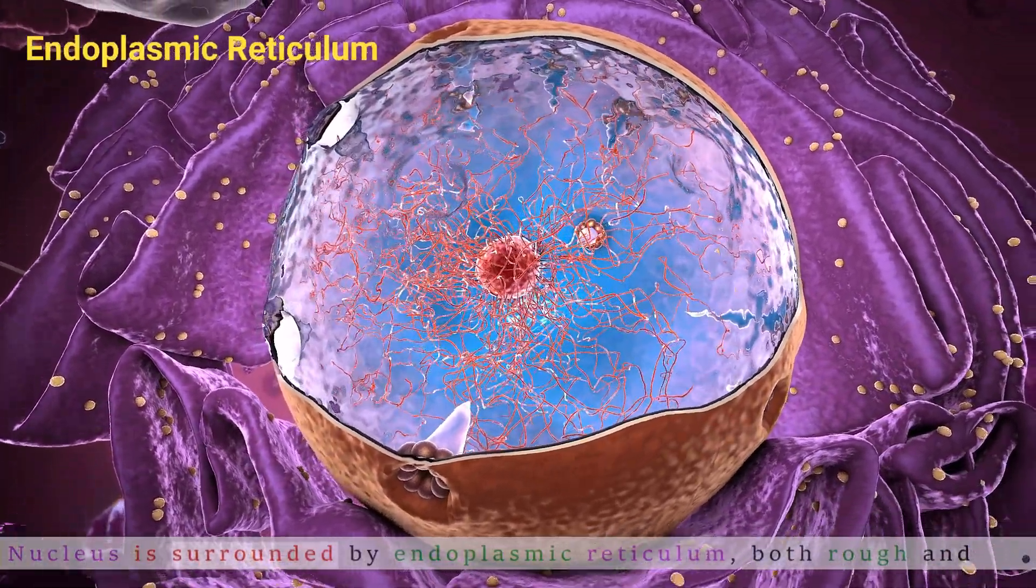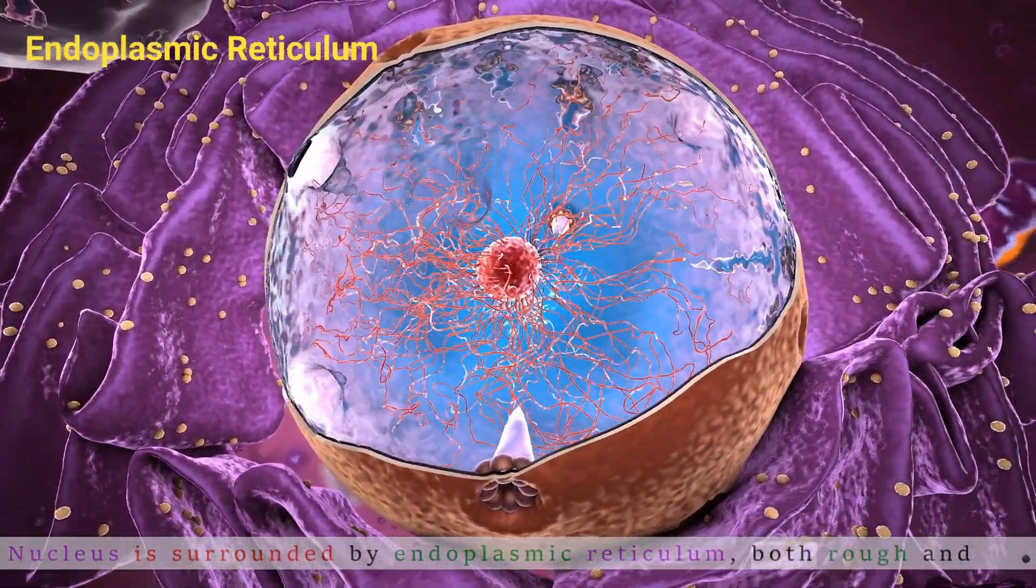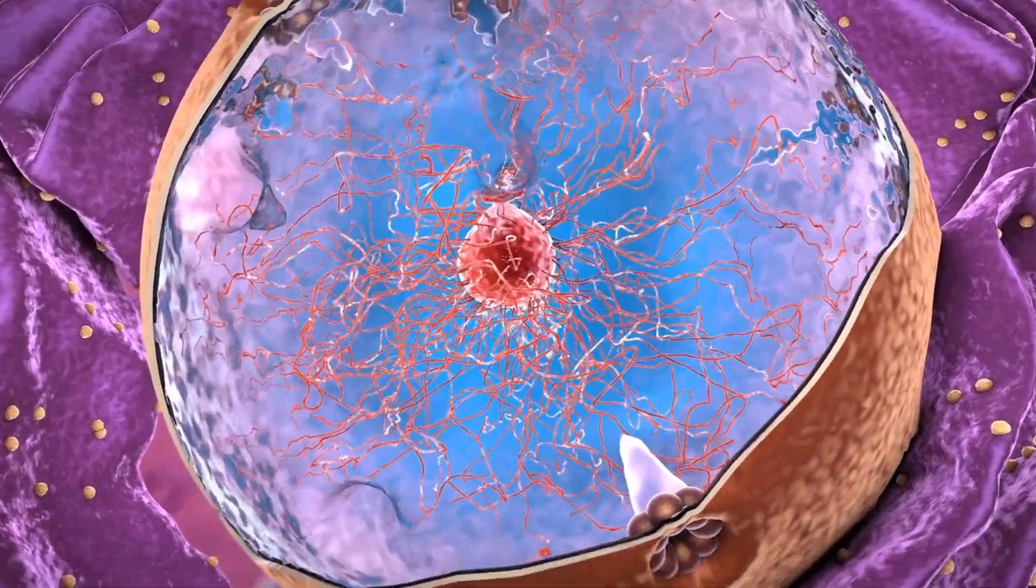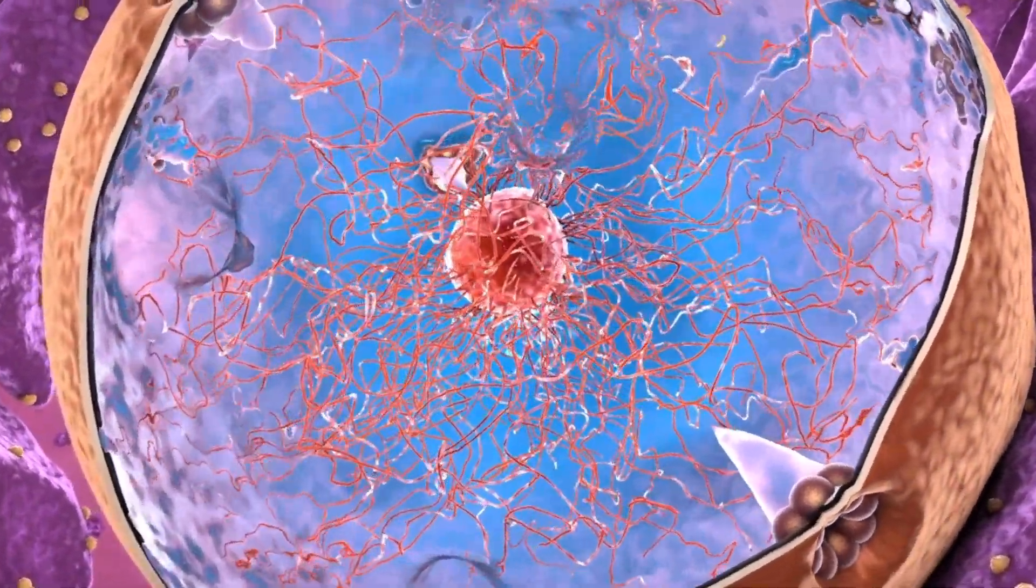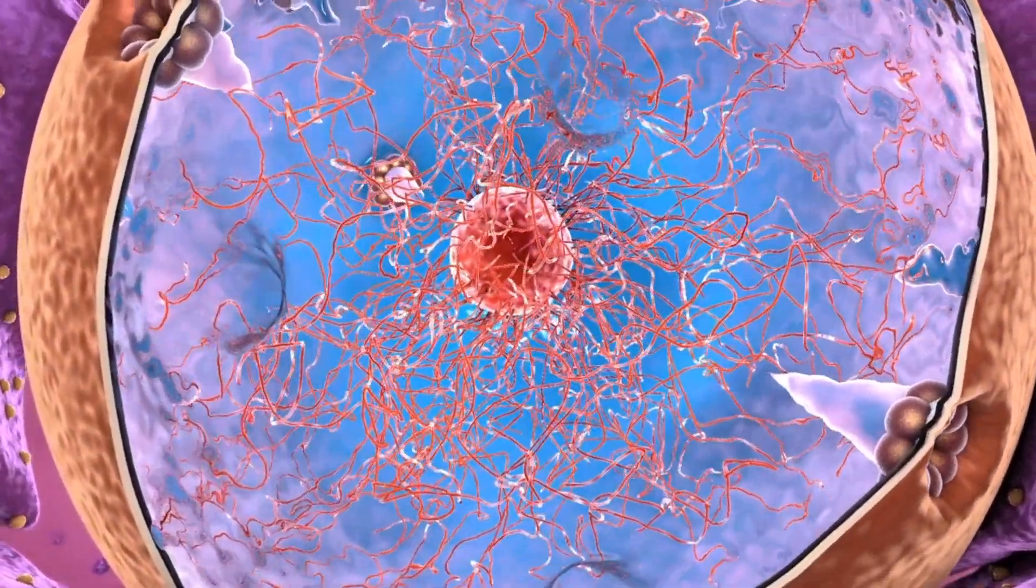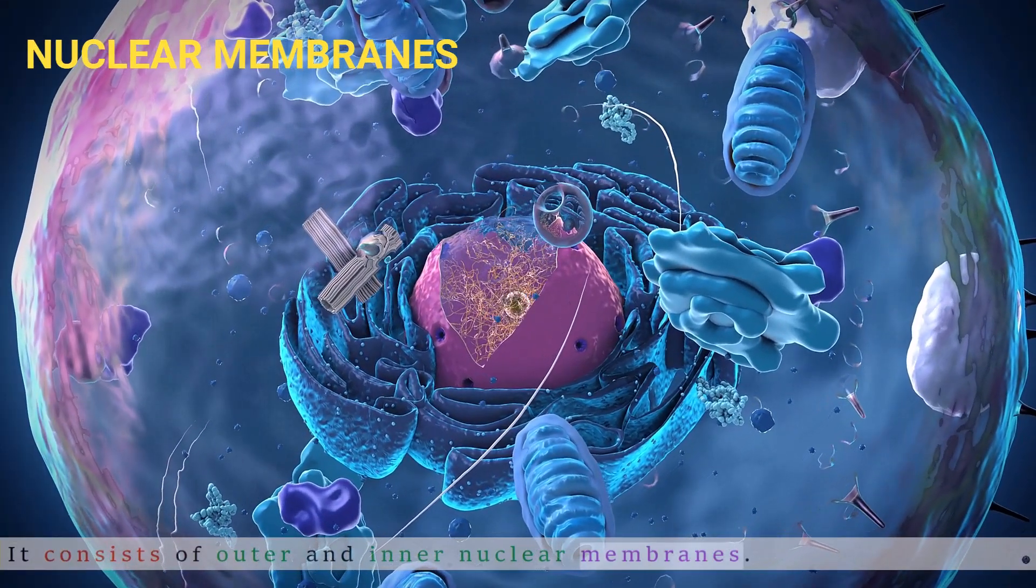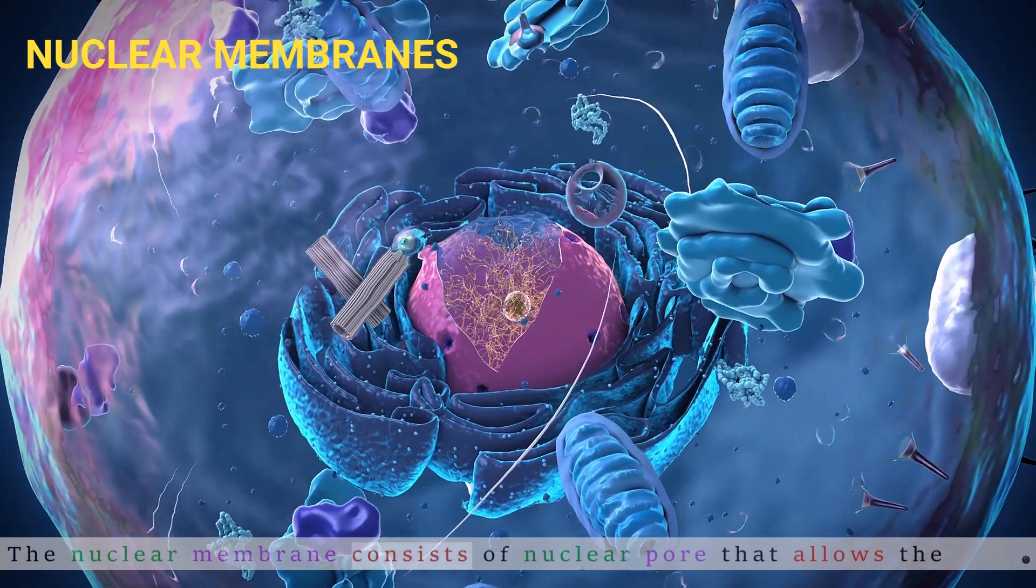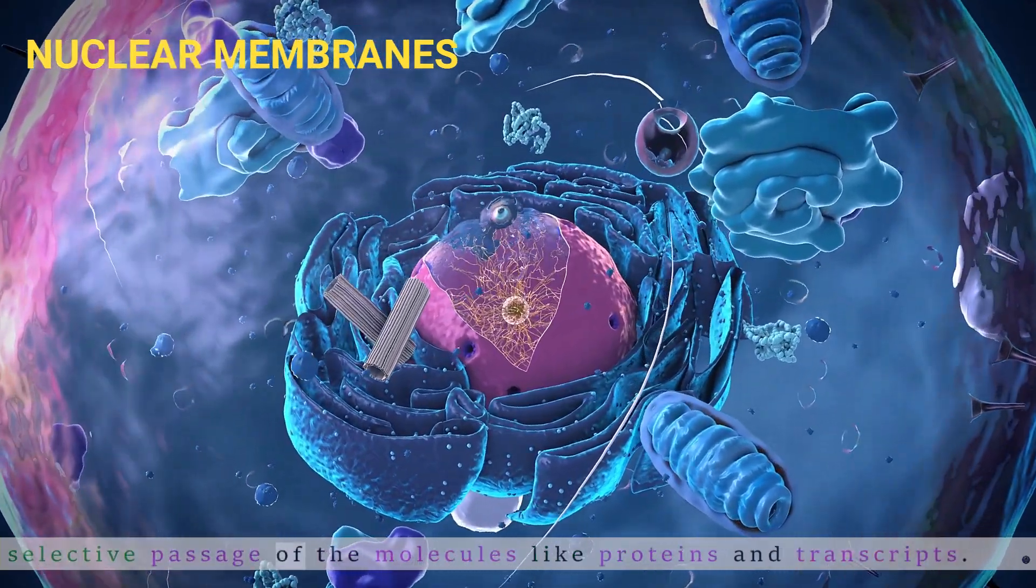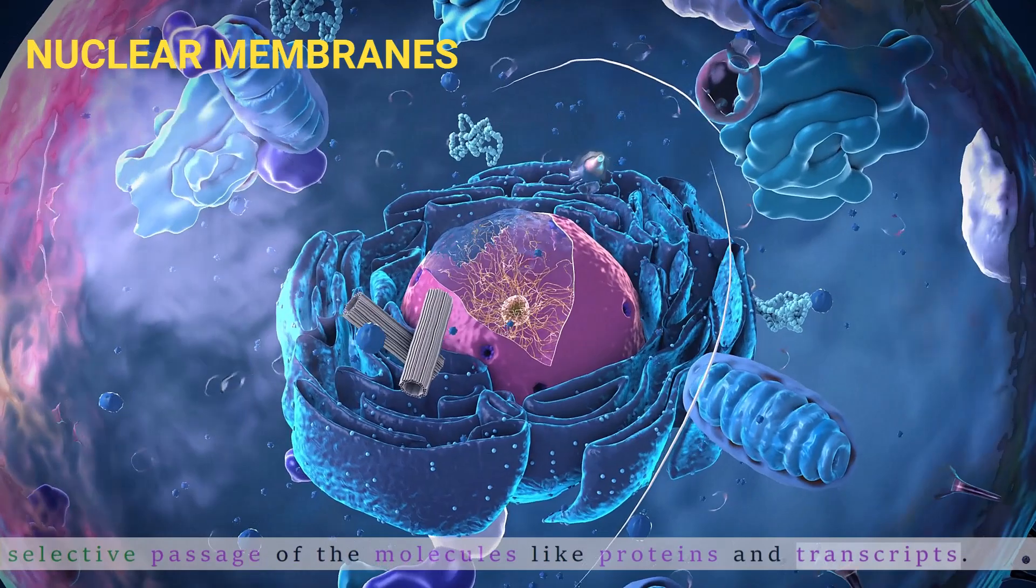The nucleus is surrounded by endoplasmic reticulum, both rough and smooth. It consists of outer and inner nuclear membranes. The nuclear membrane contains nuclear pores that allow the selective passage of molecules like proteins and transcripts.